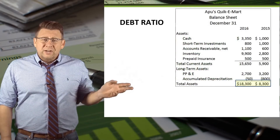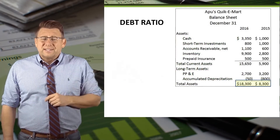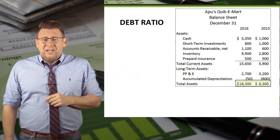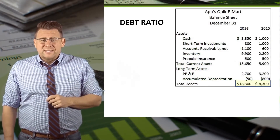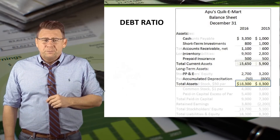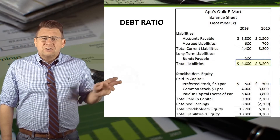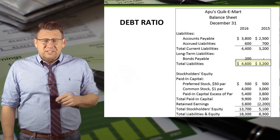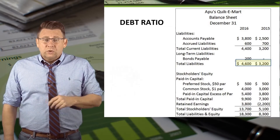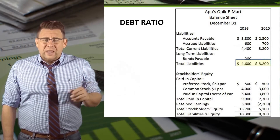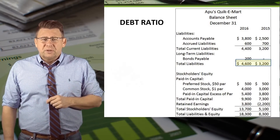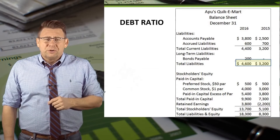Here's an asset section of a balance sheet. We'll use the highlighted total assets to determine the debt ratio. And here's the liability section of the balance sheet. We'll use the highlighted total liabilities to help determine the debt ratio.